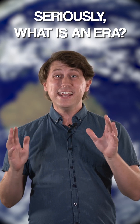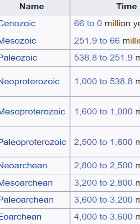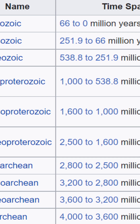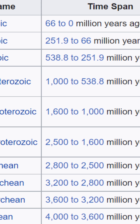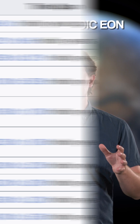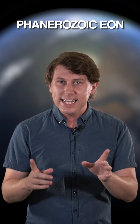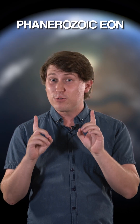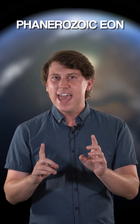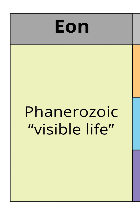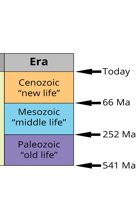Seriously, what is an era? It is the second largest unit of geological time after eons. We currently live in the Phanerozoic Eon and its history is divided into three eras: the Paleozoic, Mesozoic, and Cenozoic.